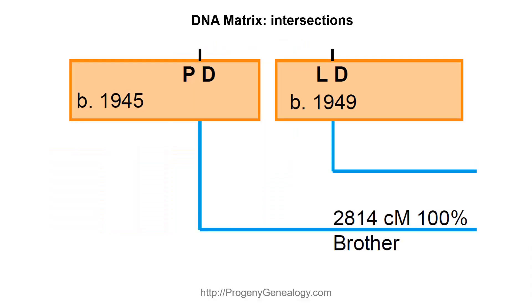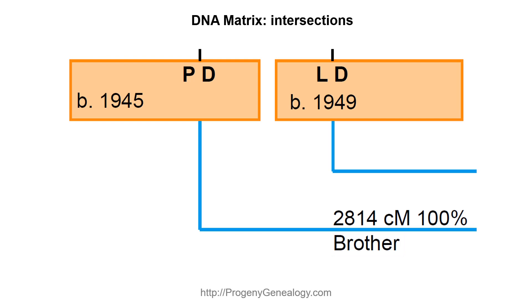The DNA matrix is a combination of a descendant chart with intersections. The intersections show the amount of DNA shared by two people, their relationship according to the genealogy, and the probability that two people who share this much DNA are thus related.